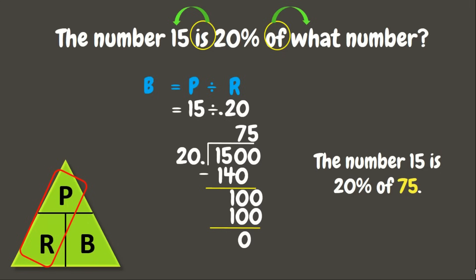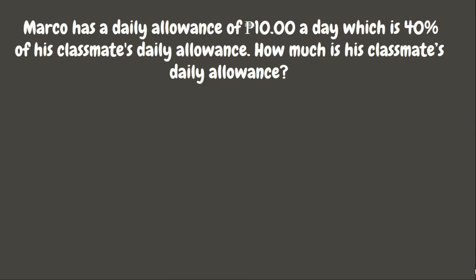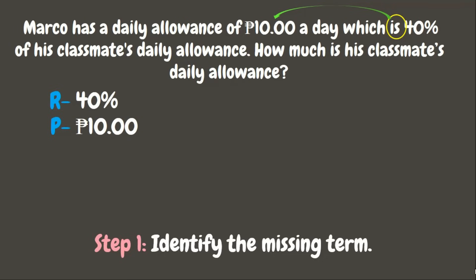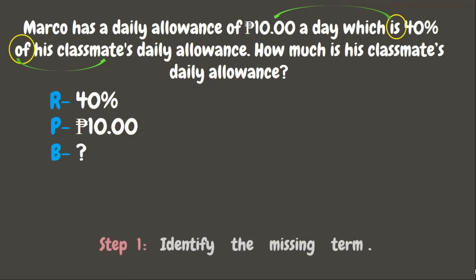Awesome job. Let's try our final example. Marco has a daily allowance of 10 pesos a day, which is 40% of his classmates' daily allowance. How much is his classmates' daily allowance? We need to get the missing term first. Since 40% has the percent sign, that means that is our rate. 10 pesos is the part or portion of his classmates' daily allowance, and it is associated with the word 'is', so 10 pesos is our percentage. Since we are looking for his classmates' daily allowance, which is associated with the word 'of', that means we are looking for the base.